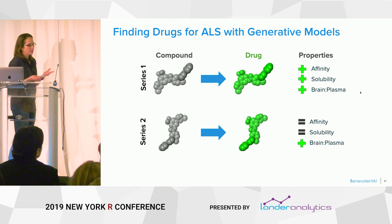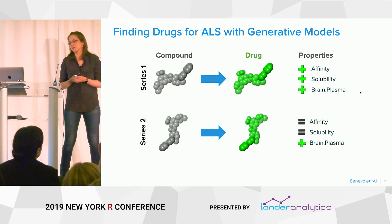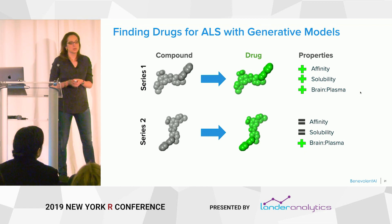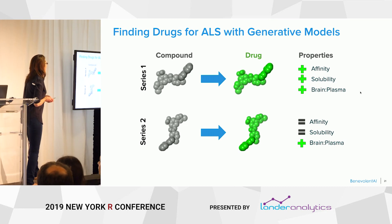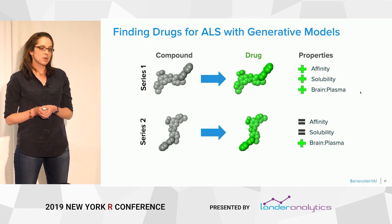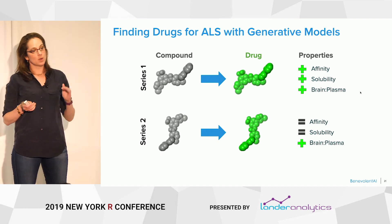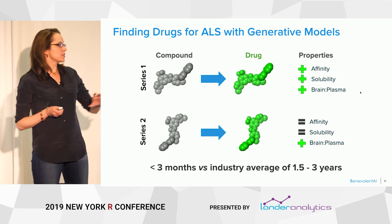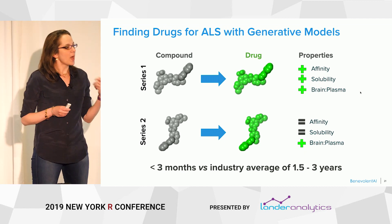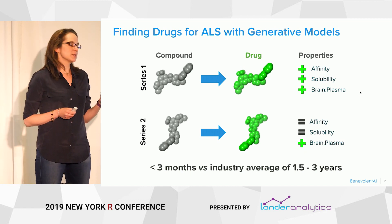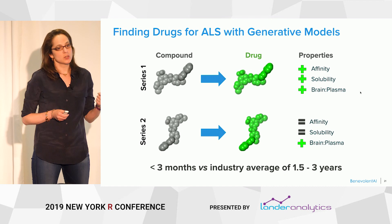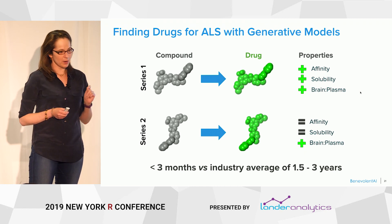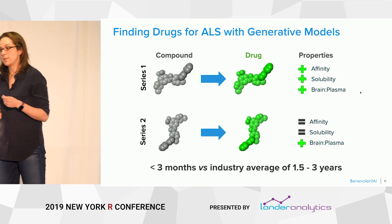Does it really work? Yes. Here are two representative compounds for a program in ALS — amyotrophic lateral sclerosis, also known as Lou Gehrig's disease — a neurodegenerative disorder. We were able to optimize their properties to make drugs in a very short amount of time: less than three months versus the industry average of about a year and a half. The properties we optimized include affinity — how tightly does it bind — solubility, and its ability to enter the brain. Since this is a neurodegenerative disorder, the compound has the additional challenge of getting past the blood-brain barrier, a protective mechanism that makes things even more difficult.